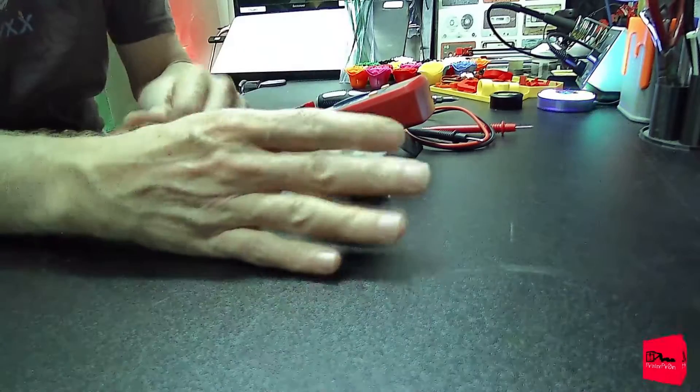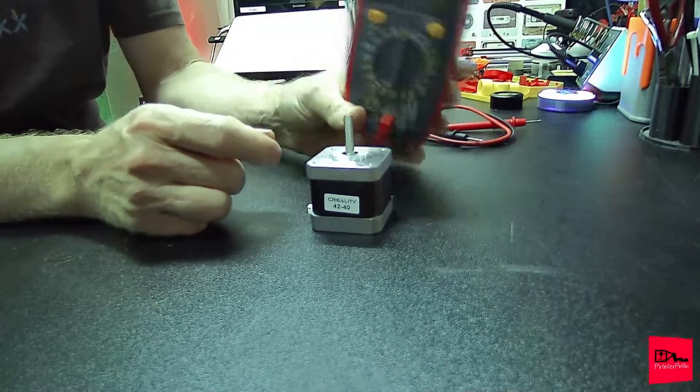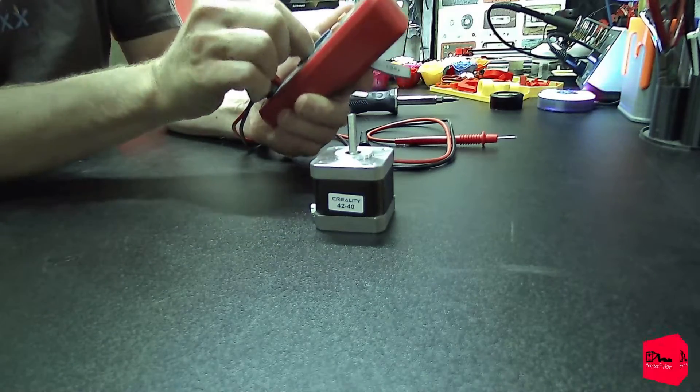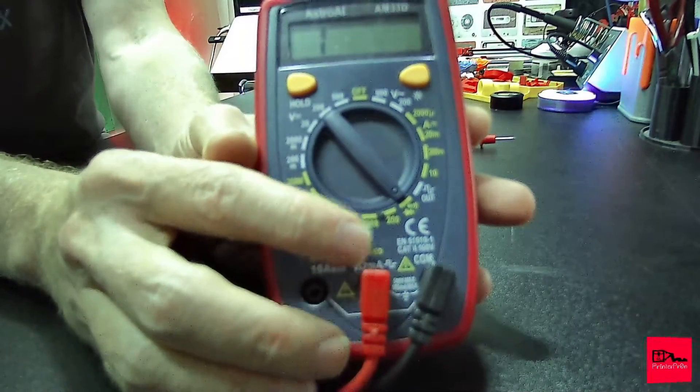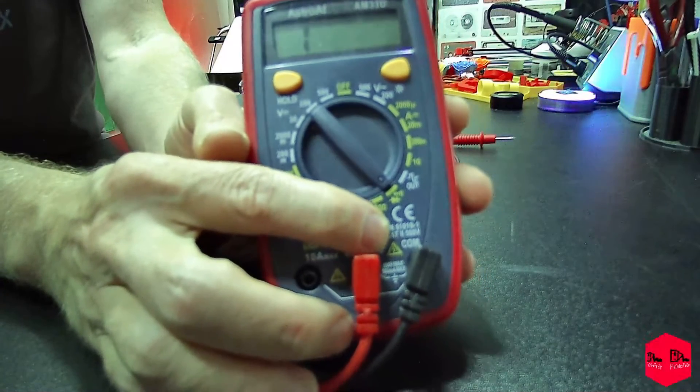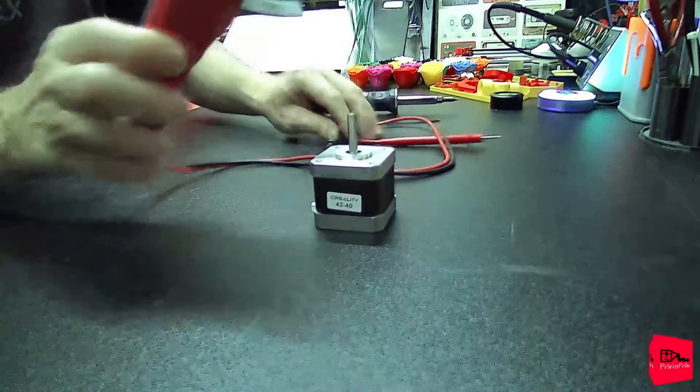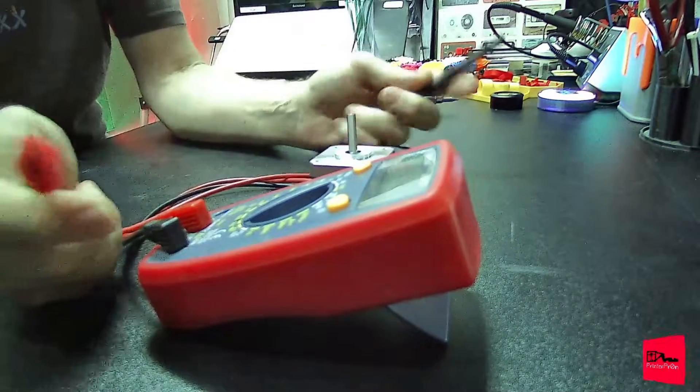So all you really need is your trusty multimeter. We're gonna stick it in continuity mode. This camera does not have close focus. Basically, the way that's gonna tell you maybe you have a complete circuit or maybe not. Super simple process.